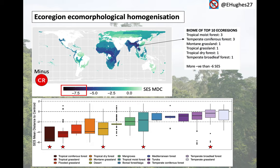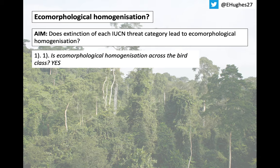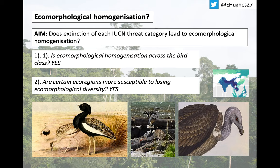These findings imply that geographical location, as well as major habitat type, is important. Overall, we find a clear pattern of ecomorphological homogenisation across the bird family, with mean distance to centroid shrinking more quickly than the null expectation. This plays out spatially, with ecoregions around the Himalayas being particularly at risk of ecomorphological homogenisation, given the likely loss of critically endangered and endangered species from the region.